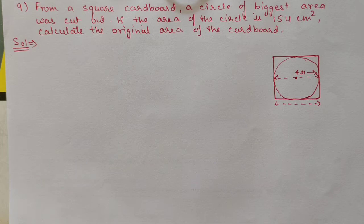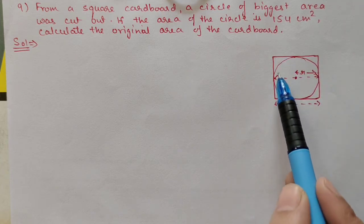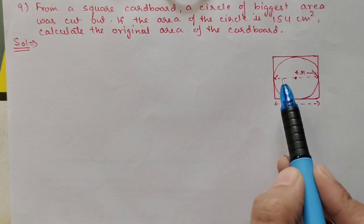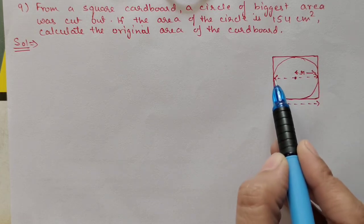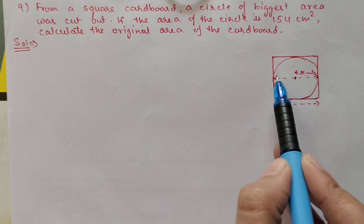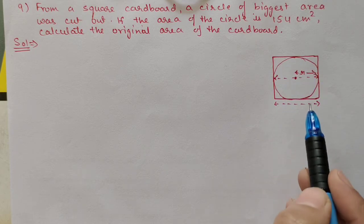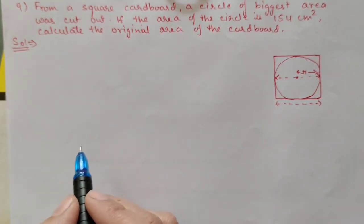Question number 9: From a square cardboard, a circle of the biggest area was cut out. If the area of the circle is 154 centimeter square, calculate the original area of the cardboard. The maximum circle that fits has its diameter equal to one side of the square, so we first find the circle's diameter.